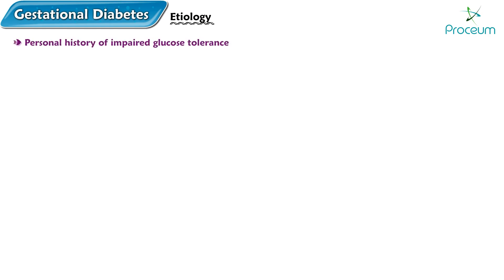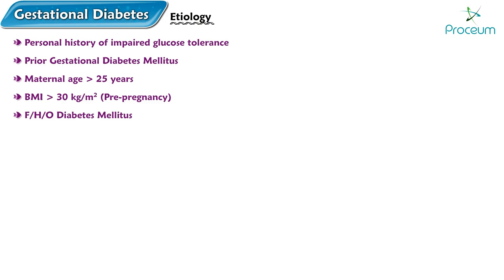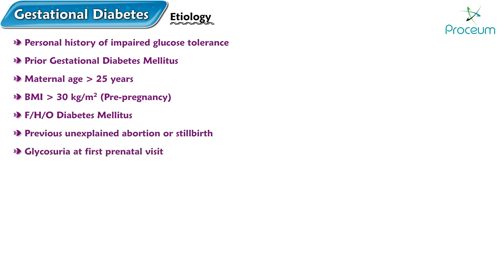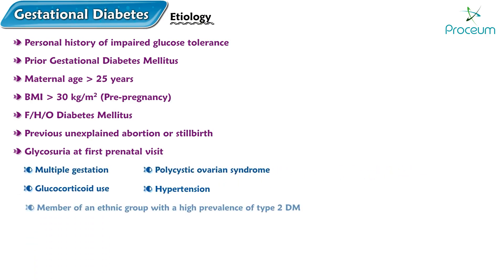The etiology of gestational diabetes involves various risk factors, including a personal history of impaired glucose tolerance or prior gestational diabetes mellitus. Other risk factors include maternal age greater than 25, a body mass index greater than 30 kg per m² pre-pregnancy, a family history of diabetes mellitus, previous unexplained abortion or stillbirth, glycosuria at first prenatal visit, multiple gestation, polycystic ovarian syndrome, glucocorticoid use, hypertension, and being a member of an ethnic group with a high prevalence of type 2 diabetes mellitus.